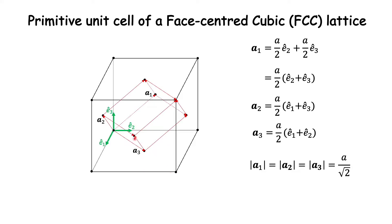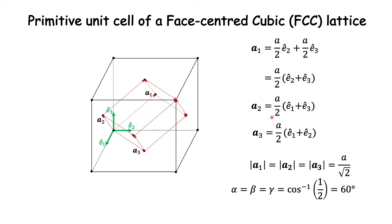Similarly, if we find the angles between A1 and A2, A2 and A3, and A3 and A1, these three angles alpha, beta, and gamma are all equal and can be shown to equal 60 degrees. This can be easily found by taking the dot products of these vectors.